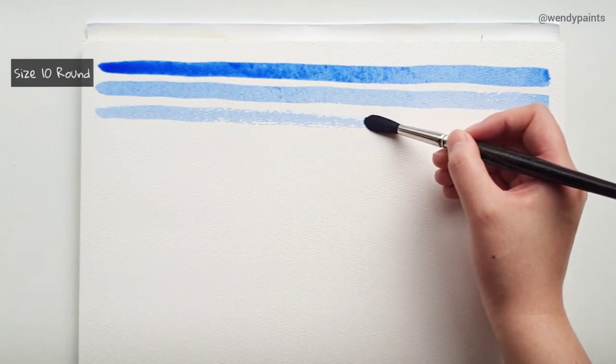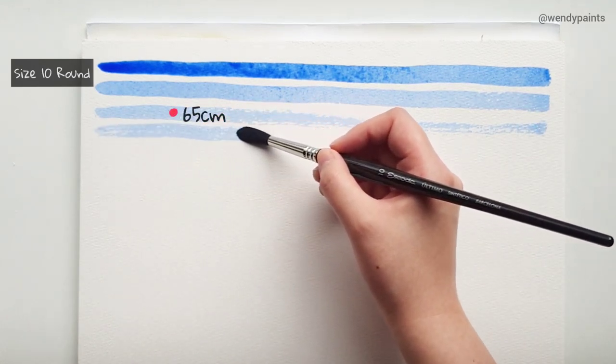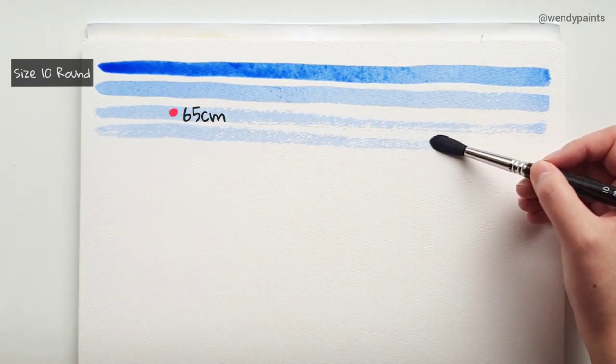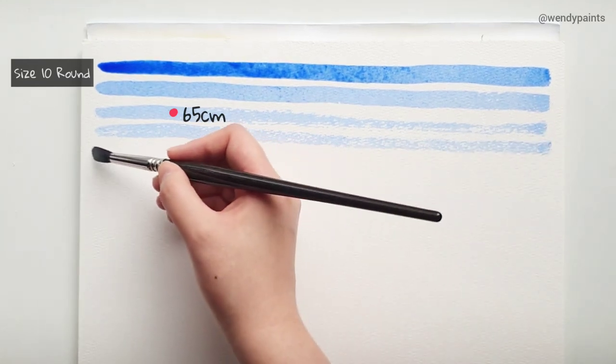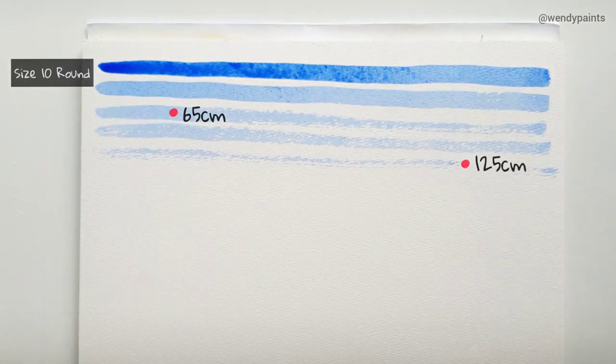This size 10 round brush was able to draw a solid continuous line up to about 65cm and then from there on, you're pretty much getting more of a dry brushed effect as it starts to run out of paint until it eventually cannot deposit any more paint at about 125cm.